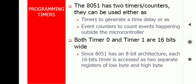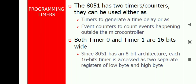Now I am going to explain the Microcontroller Timer Programming. The Microcontroller 8051 has two 16-bit timers. The timers can be used to generate a time delay or to count external events happening outside the Microcontroller. There are two timers, Timer0 and Timer1, 16-bit wide. As the Microcontroller 8051 has 8-bit architecture, the timers have a register of low byte and high byte.